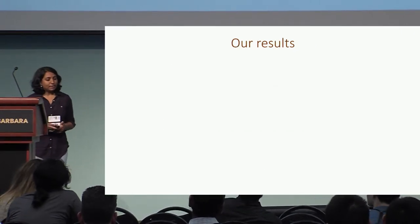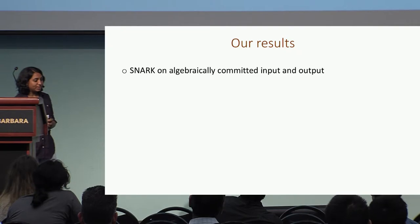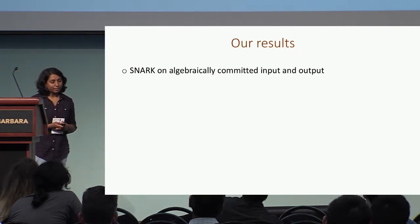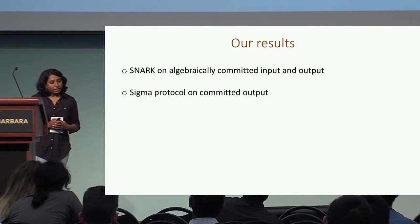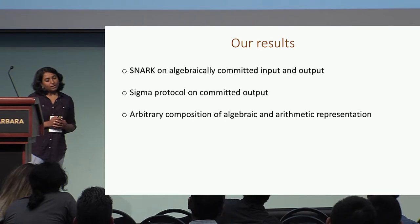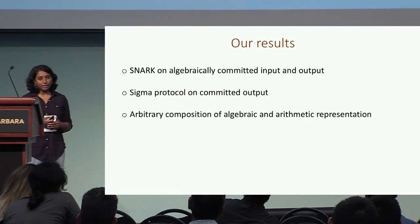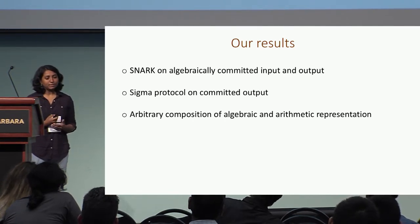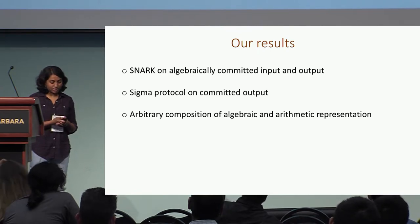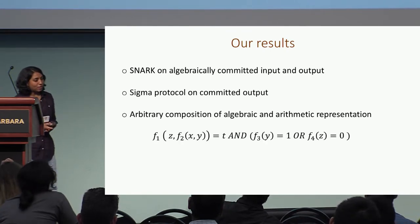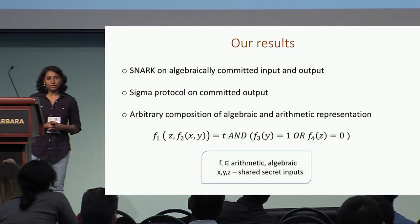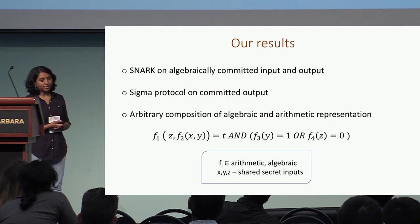We study how to prove composite statements efficiently and show the following. We give constructions for a SNARK on algebraically committed input and output, and constructions of sigma protocols on committed output. We then show how to use these two building blocks to prove composite statements that arbitrarily compose algebraic and arithmetic representations of functions — for instance, a composite function where each F_i could have an arithmetic or algebraic representation and share secret inputs.